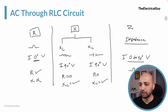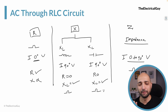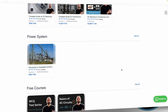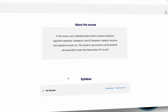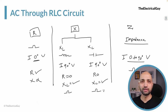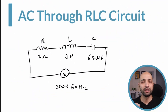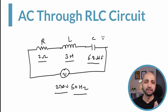Resistance, inductive reactance, and capacitive reactance are all measured in ohms. These are the three basic things we need to understand before studying the series RLC circuit. The basic RLC circuit shown here has a 230-volt AC supply at 50 Hz frequency, connected in series with a 2-ohm resistor, a 3-henry inductor, and a 6.8-microfarad capacitor.